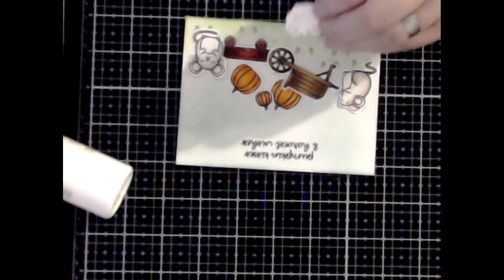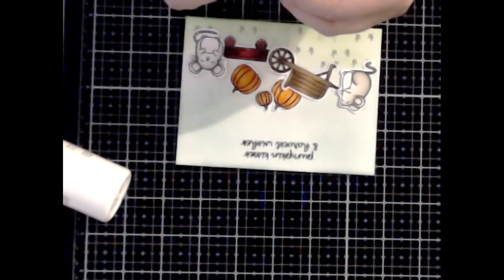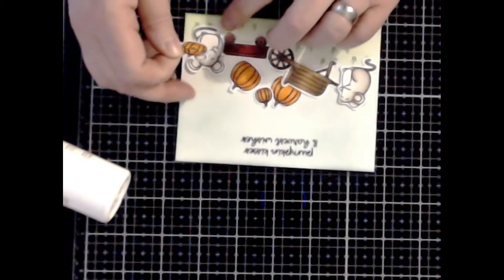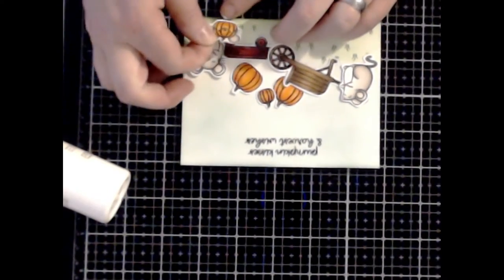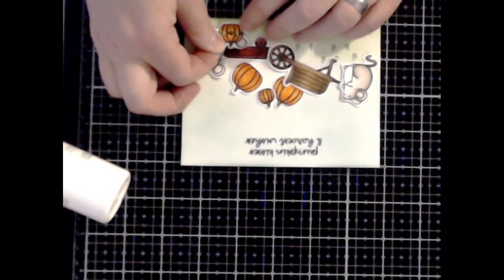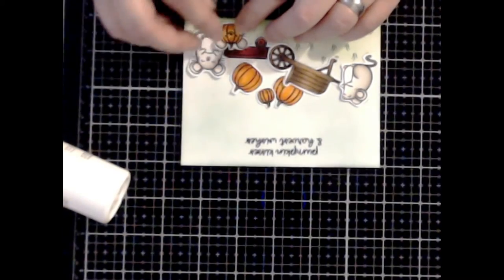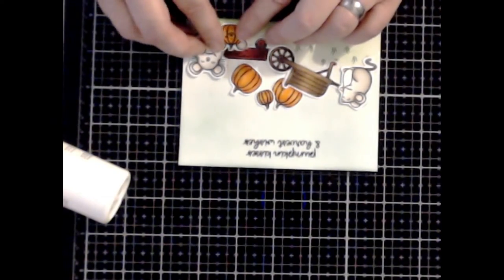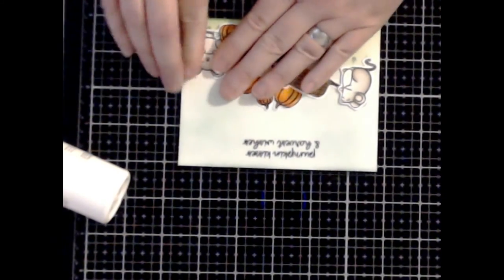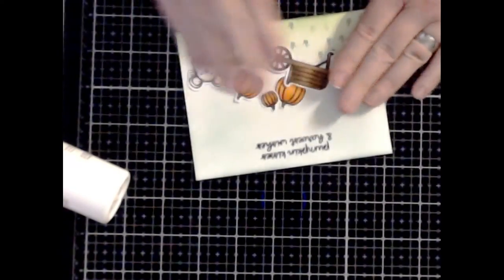And then my favorite is this little guy here that I'm placing on the card. He's a little pumpkin with little mouse ears, so stinking cute. I thought that was so adorable.